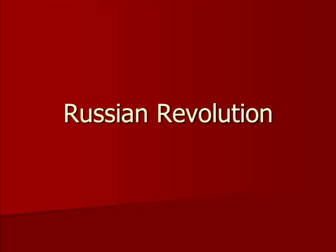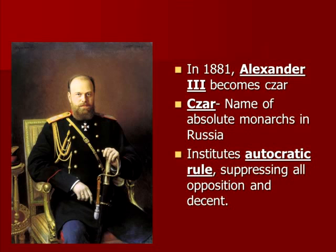As you guys know, in World War I, Russia had to step out because of the Russian Revolution — they had to end their involvement in World War I. So what we're going to talk about is what was going on in Russia that caused that to happen. To do that, we have to understand a little bit about who was in charge of Russia, and we have to go back to 1881.